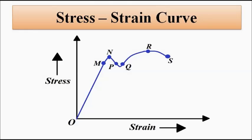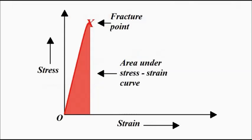To determine toughness from a stress-strain curve, consider a curve where the linear elastic region is followed almost immediately by fracture. Drawing a vertical line from the fracture point down to the strain axis and shading that area under the curve gives us a small shaded region — this area indicates the toughness of the material. As you can see, it is very low.